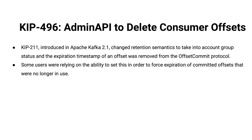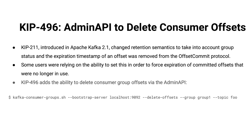They used to just be expired by timestamp. KIP 211 changed that — it took away that timestamp expiration and said if you're part of an extant consumer group that has not gone away, your offsets will live forever. That KIP took away the ability to specify the timestamp at which those offsets should be deleted. KIP 496 gives us an explicit API for deleting consumer offsets — now there's an intentional way, using an admin API call, to delete consumer offsets for a consumer group you're not using anymore.